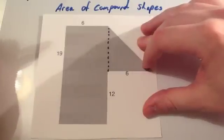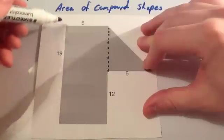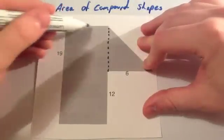Then what you need to do is work out any missing sides. So for the rectangle, I can clearly see that the length of the rectangle is 19. The width of the rectangle is 6.